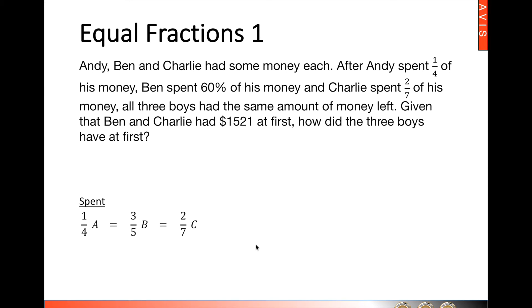If Andy spent one-quarter of his money, he will be left with three-quarters of his money. Ben, one whole minus three-fifths, and that will give you two-fifths. One whole minus two-sevenths, and Charlie would have five-sevenths left. Looking at what is left, because this is our focus, it says that all three boys had the same amount of money left. So let's focus our attention on this particular set of fractions.